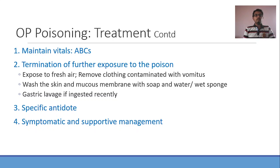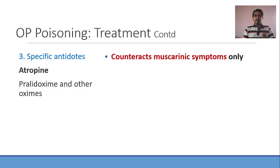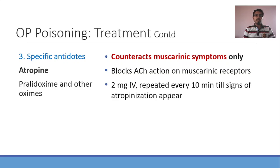The third step is providing the specific antidote. There are two specific antidotes for OP poisoning: atropine and oximes. Between these two, atropine is a life-saving drug in the management of OP poisoning. Atropine is an anti-muscarinic agent — it blocks acetylcholine action on the muscarinic receptors. OP poisoning will have both muscarinic and nicotinic symptoms; atropine counteracts only the muscarinic symptoms. You administer it through IV, 2 mg, and repeat it every 10 minutes until signs of atropinization appear.